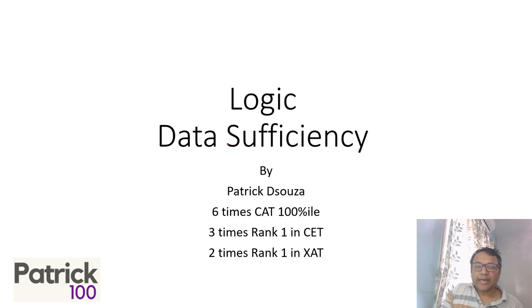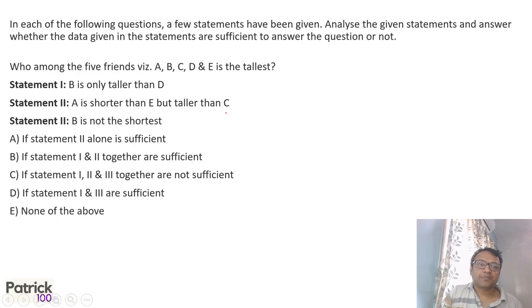Hi, so we're looking at problems on data sufficiency based on logic. Here three statements are given. Who is the tallest among the five people? We look at each of them. B is only taller